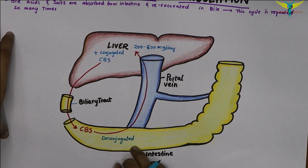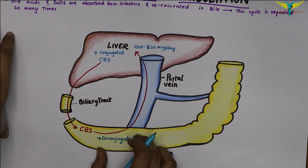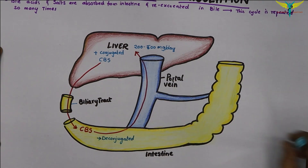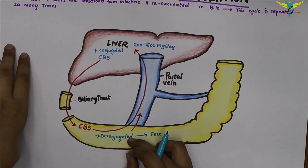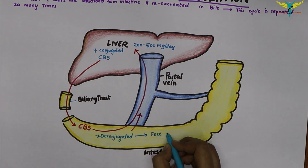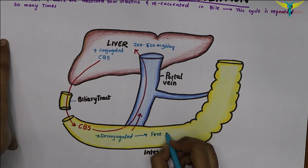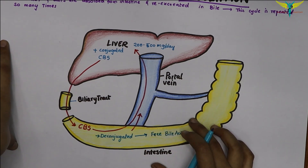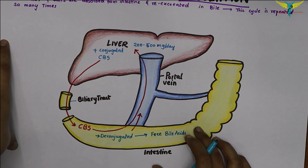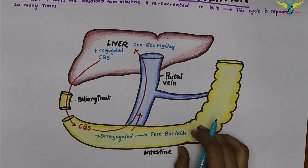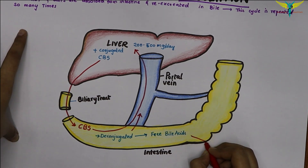The CBS in the intestine get deconjugated, and this deconjugated or unconjugated bile salt is also absorbed into the portal circulation. This deconjugated CBS is present in the intestine as free bile acids. In the terminal ileum and colon, by the action of bacteria, these free bile acids get converted into secondary bile acids (SBA).